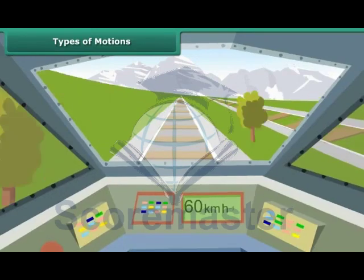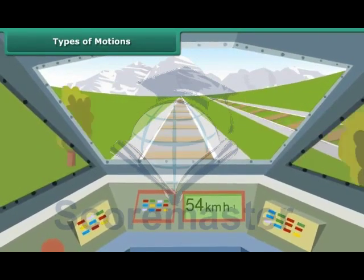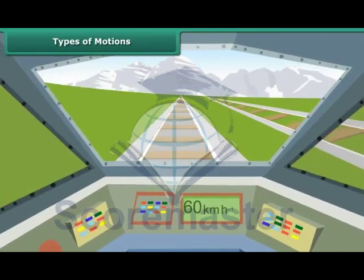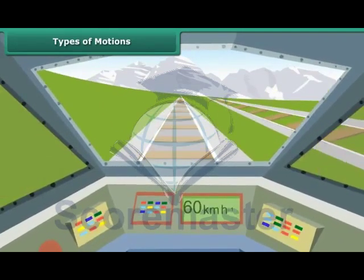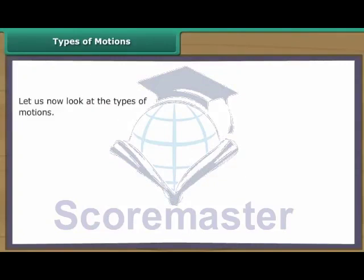Types of Motions. As you know, motion is the change in position of an object with time. The change in its position can be determined through distance measurements. Let us look at the types of motions.